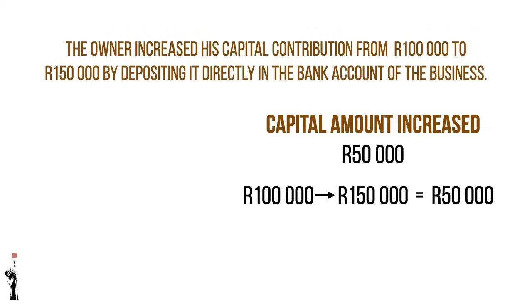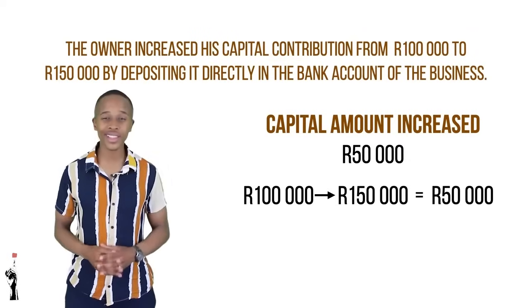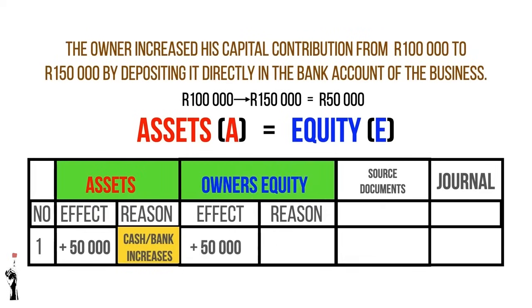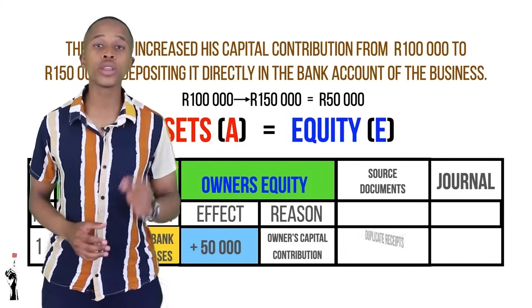Now that we understand that, we can look at the accounting equation. Your assets increase with 50,000 rand because your cash — which is the bank, petty cash, or cash float — increases because the business receives money. You can write cash or bank; both are correct. Remember, we always do accounting from the point of view of the business. The owner's equity increases with 50,000 rand because the owner gave a capital contribution to the business. The assets equal the owner's equity because both are 50,000 rand, so the accounting equation is correct.